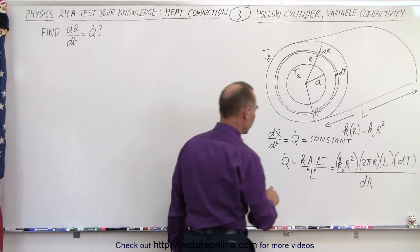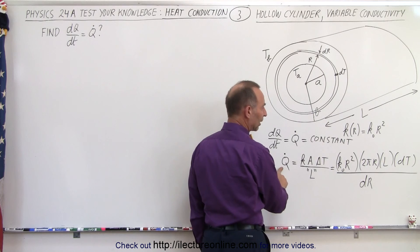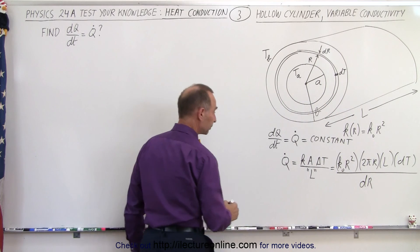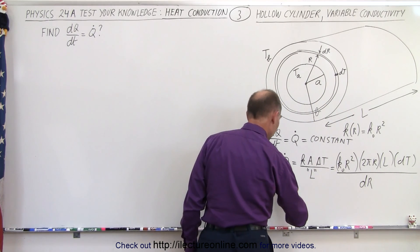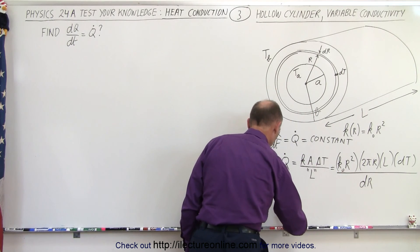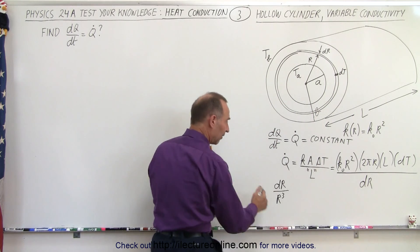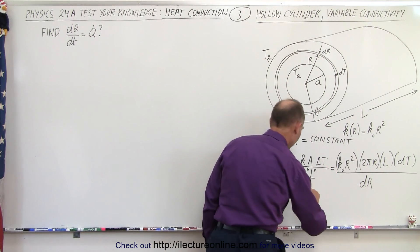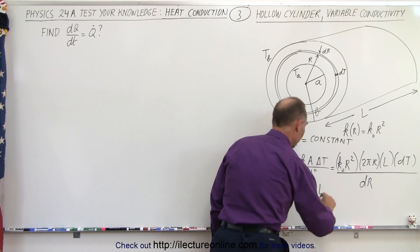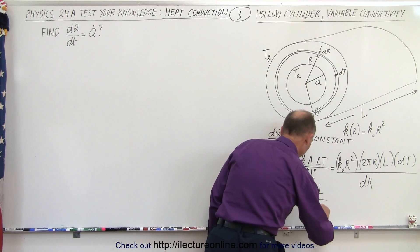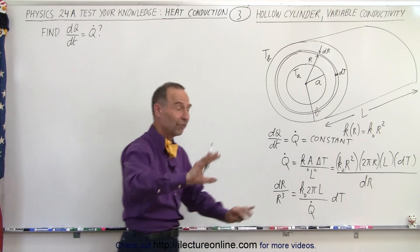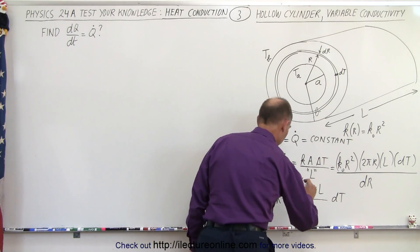Now we realize that our equation — Q-dot being a constant — only has two differentials, dr and dT, so we're going to separate those two. We can write this as dr divided by r-squared times r, which is r-cubed, so all the r variables are on the left side. On the right side we have K-naught times 2π times the length, all divided by Q-dot — that's also a constant — times dT. So we've separated the variables; all of this on the right is a constant.